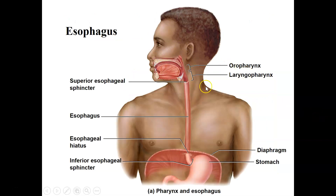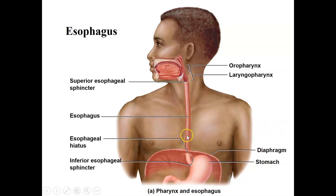Here we can see the oral cavity, esophagus, and pharynx — oro- and laryngopharynx — showing three segments of the alimentary canal, along with the superior esophageal sphincter and the inferior esophageal sphincter, also called the gastroesophageal sphincter. In order to reach the stomach, the esophagus has to pass through an opening in the diaphragm. That opening is known as the esophageal hiatus, and it leads into the stomach.